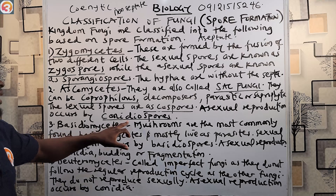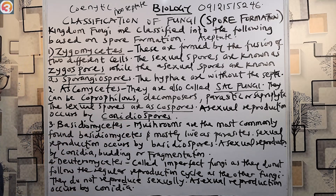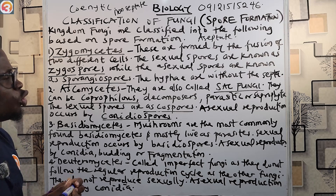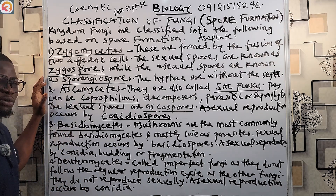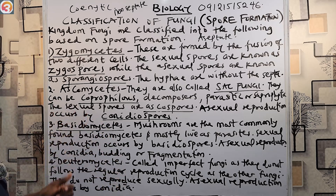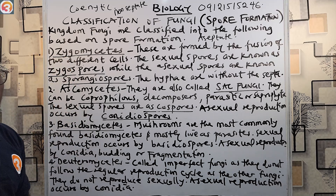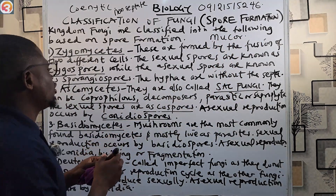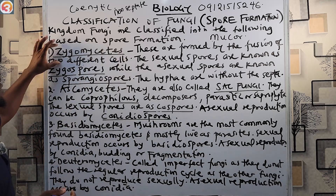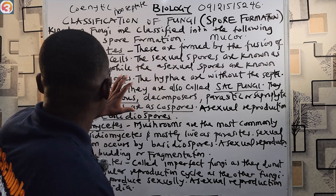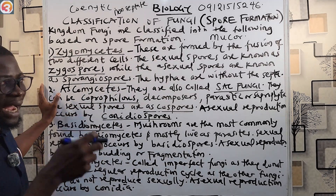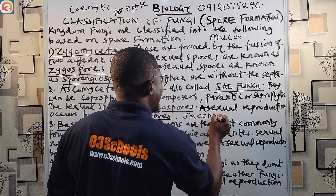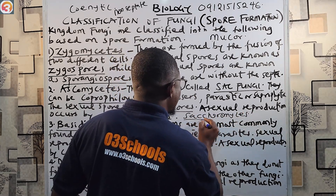For zygomycetes, asexual reproduction is by sporangiospores, while for ascomycetes it is by conidiospores. An example of zygomycetes is Mucor (M-U-C-O-R). An example of ascomycetes is Saccharomyces — take note of that. The fungi that form ascospores are ascomycetes, just as the fungi that form zygospores are zygomycetes.